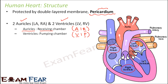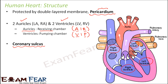This is the right ventricle and this is the left ventricle. Now how are the auricles and ventricles separated from each other? We have a separation or a partition called the coronary sulcus. The coronary sulcus separates the auricles from the ventricles.